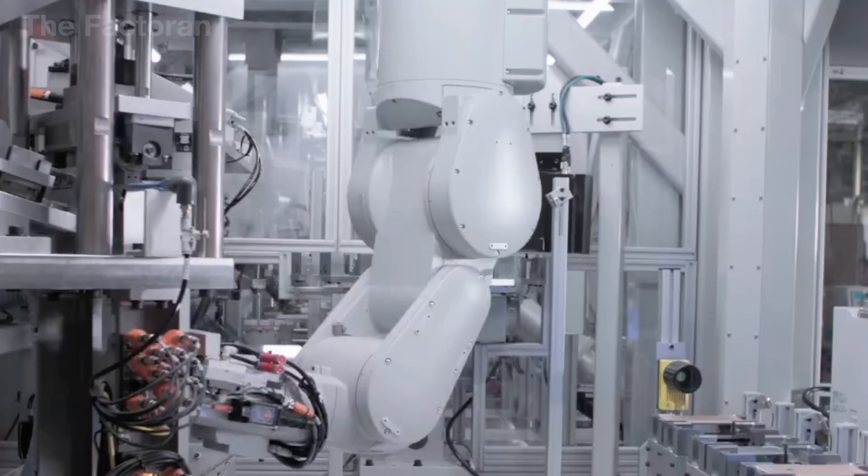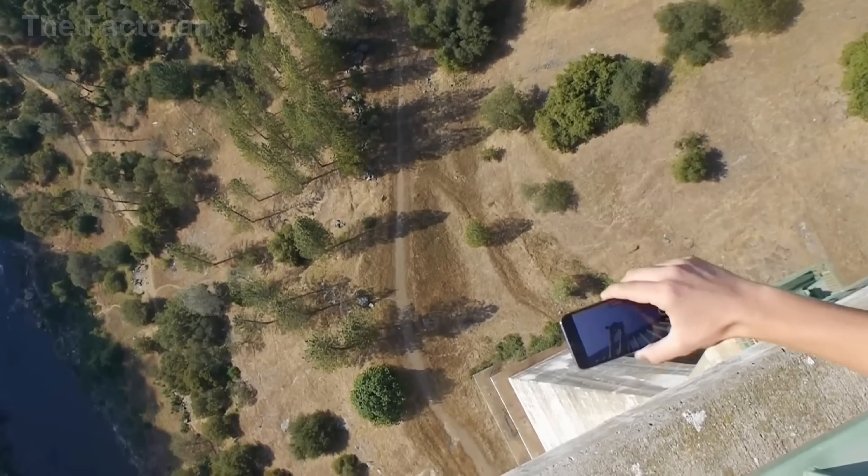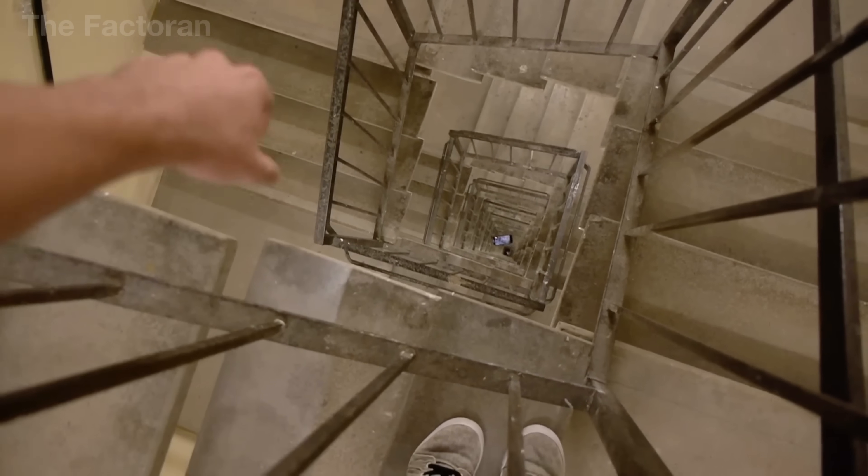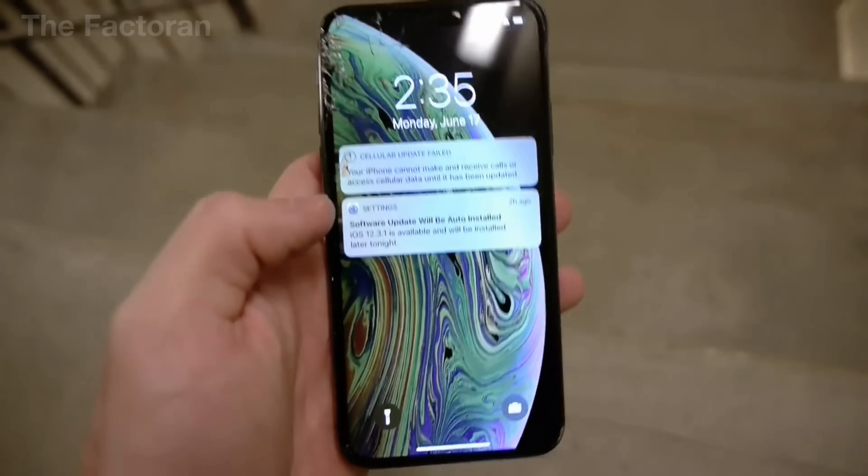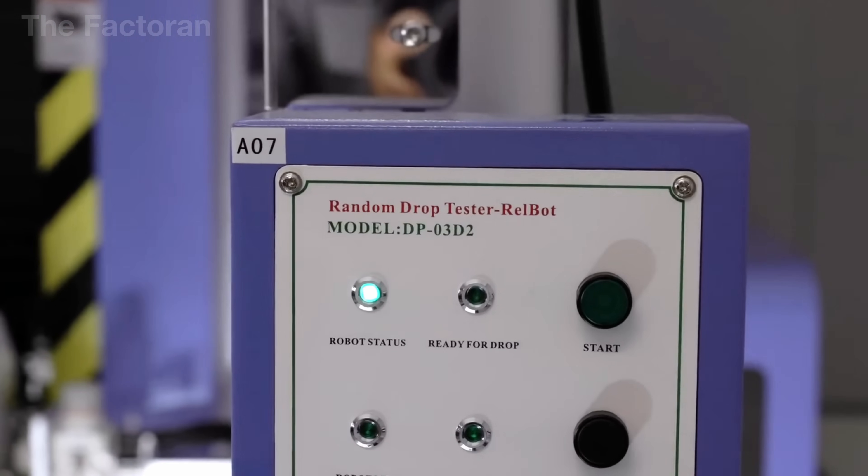In addition, each iPhone must undergo drop tests, during which the device is released from various heights onto different surfaces to simulate real-world impacts. High-speed sensors and cameras record every effect, verifying whether the screen, frame, and internal components can withstand the forces of impact without damage.